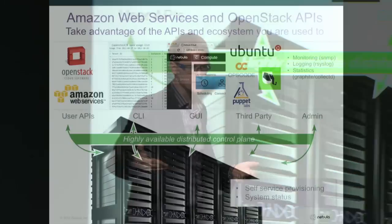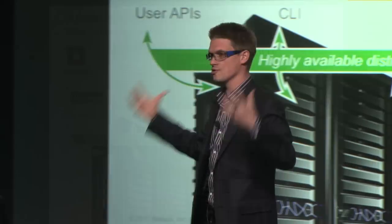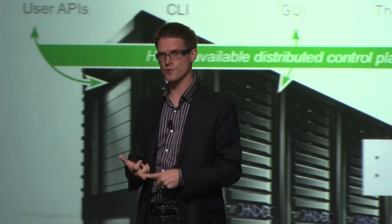What you have when you deploy this is one system with one thing you can count on: the control plane, the APIs. As your application needs more resources, you can count on the availability of those APIs — more compute, more networking, block storage. That's what Nebula worries about. What you worry about is capacity, and you address that using the showback tools and self-service provisioning tools so your end users have the resources they need. You've got OpenStack APIs, Amazon APIs, command line tools, and a rich user interface.